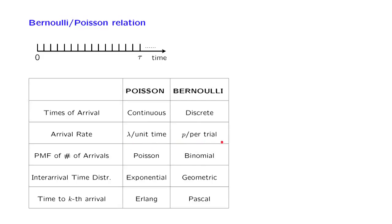Based on our model, we were interested in three kinds of quantities, and we found the distributions of them. The first quantity is the number of arrivals during a certain time interval. For the discrete case, the number of arrivals has a binomial distribution, whereas for the Poisson case, the distribution is that of a Poisson random variable.